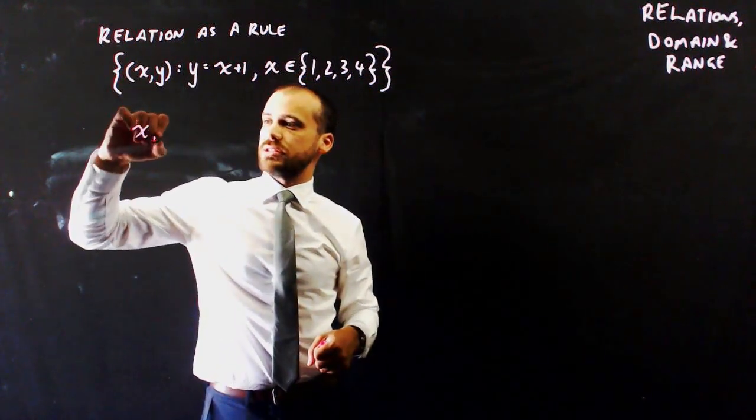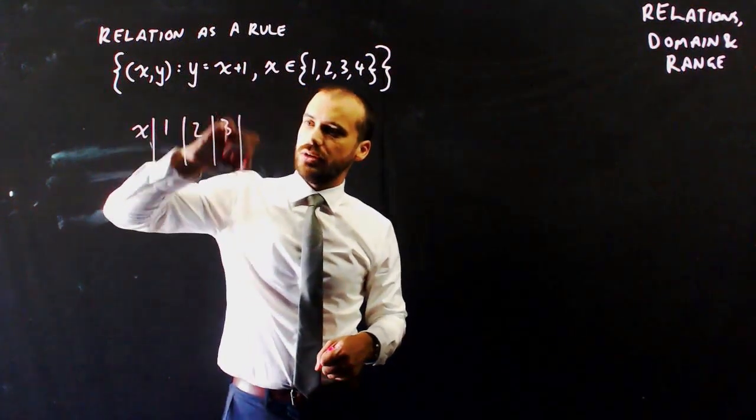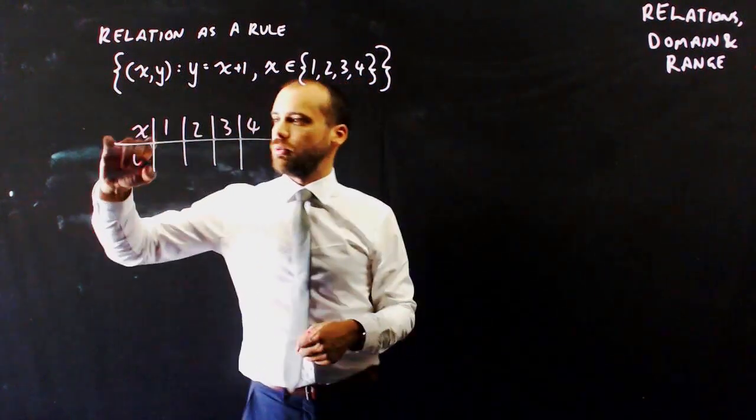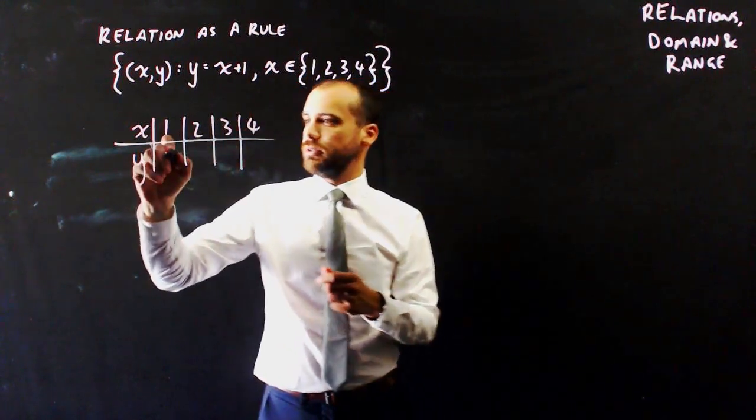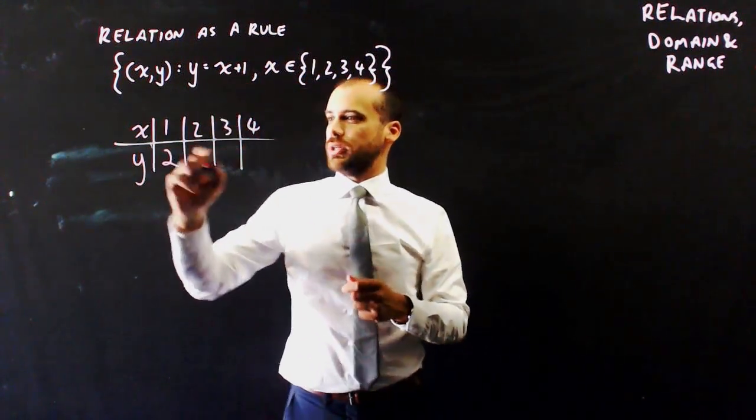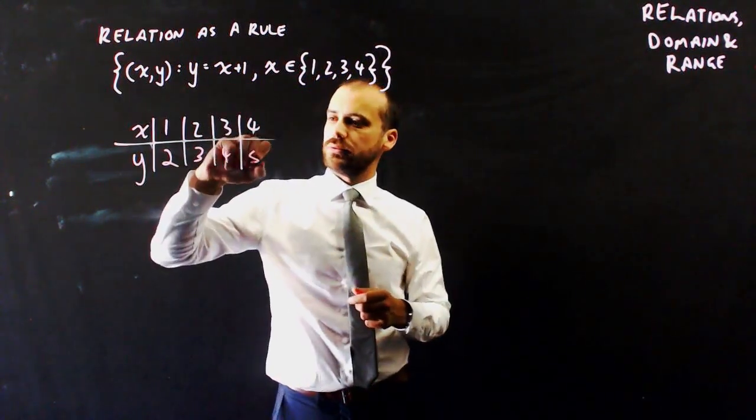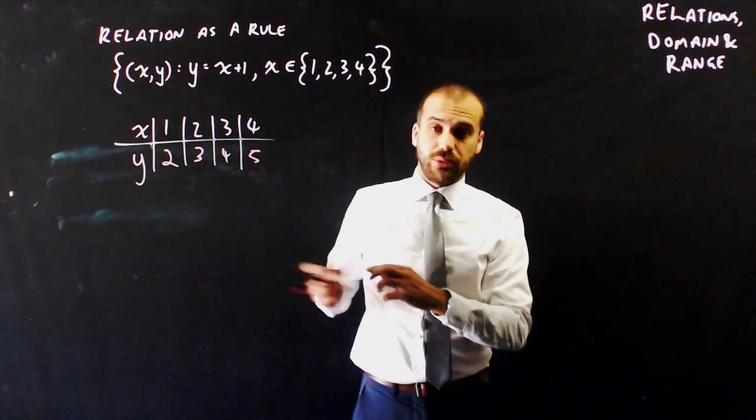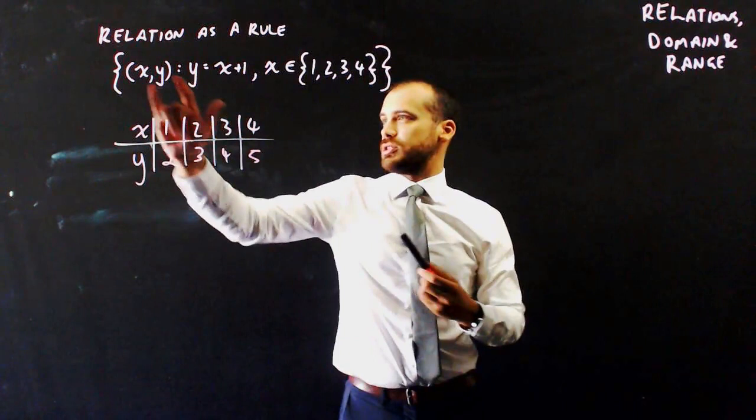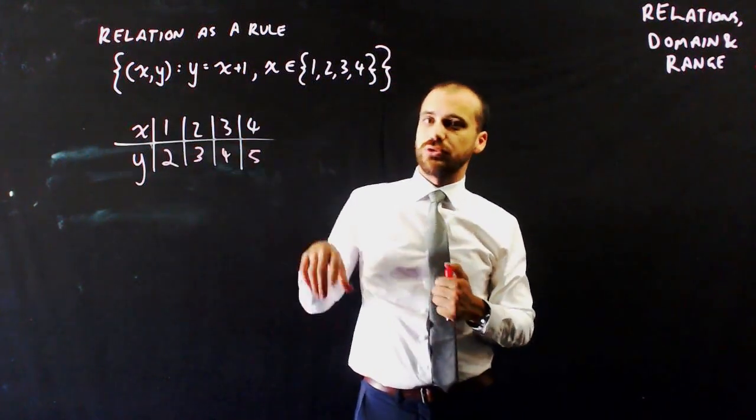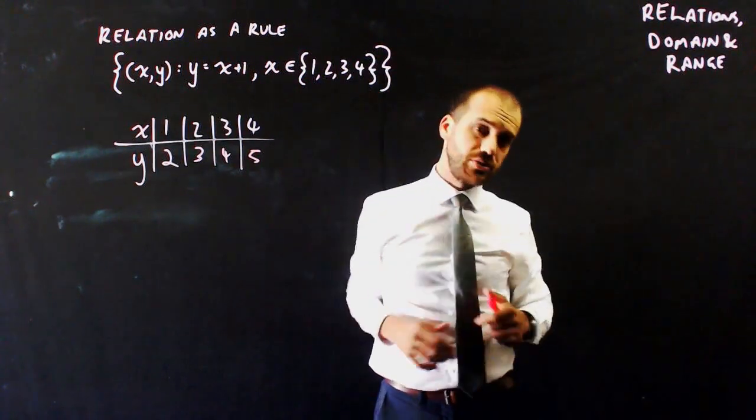If x is 1, 2, 3, or 4, then y will be x plus 1, so 1 plus 1, 2 plus 1, 3 plus 1, and 4 plus 1. A table of values. So this is just a fancy way of saying this relation as a rule, the set of ordered pairs follows this rule where x is these specific numbers. Our domain is 1, 2, 3, 4.